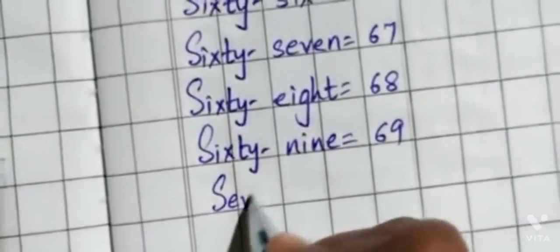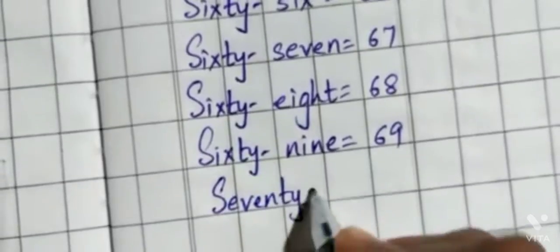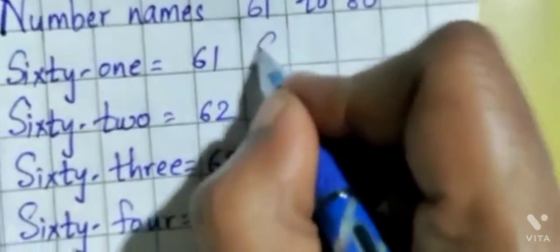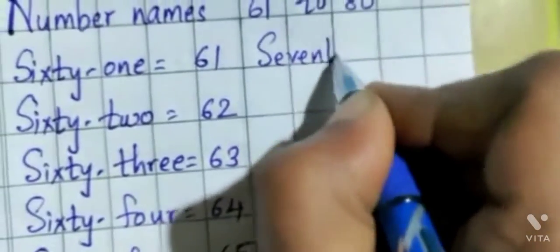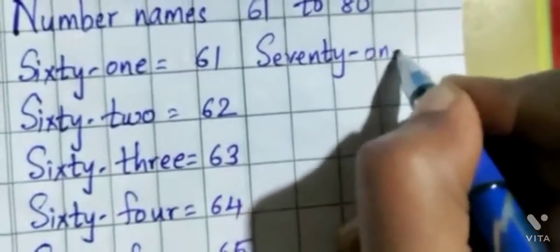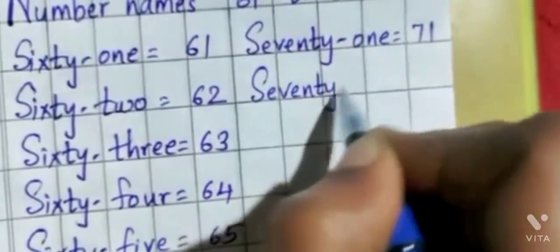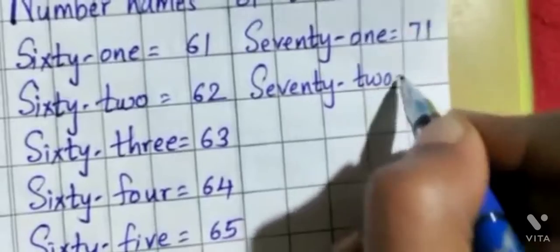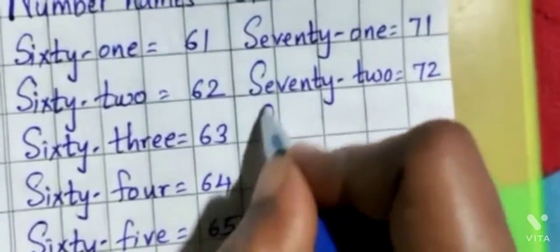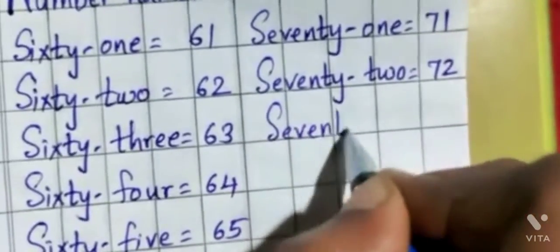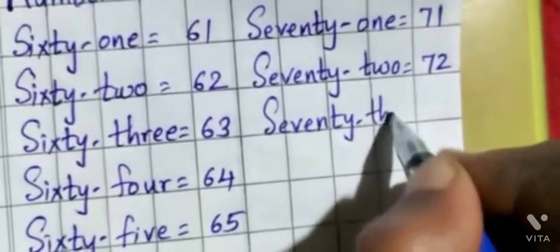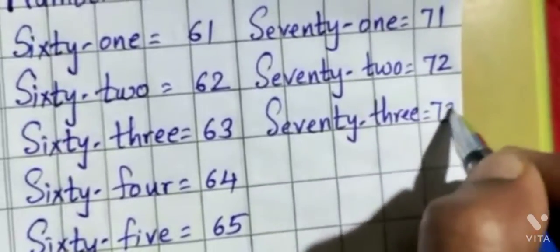S-E-V-E-N-T-Y, 70. S-E-V-E-N-T-Y-O-N-E, 71. S-E-V-E-N-T-Y-T-W-O, 72. S-E-V-E-N-T-Y-T-H-R-E-E, 73.